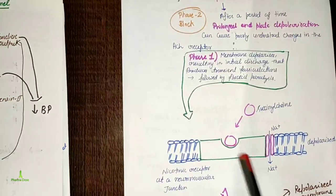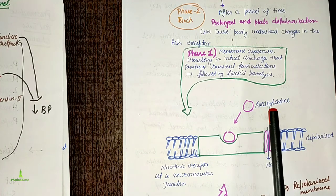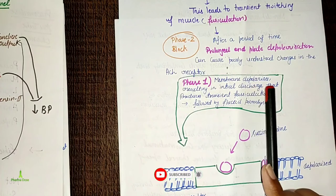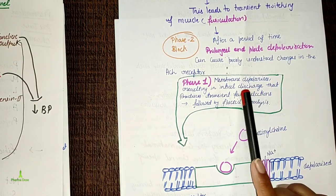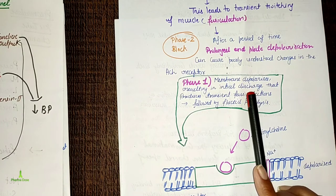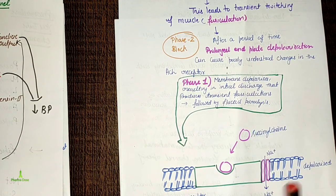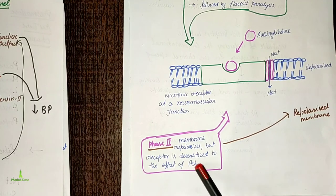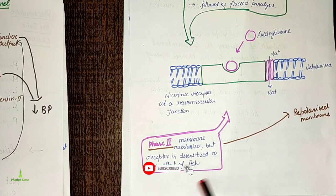Now we will look at a diagram of the nicotinic receptor at the neuromuscular junction. Succinylcholine is the depolarizing neuromuscular blocking agent shown. In Phase 1, the membrane depolarizes, resulting in electrical discharge that produces transient fasciculations. In Phase 2, the membrane repolarizes but the receptor becomes desensitized to the effect of acetylcholine.